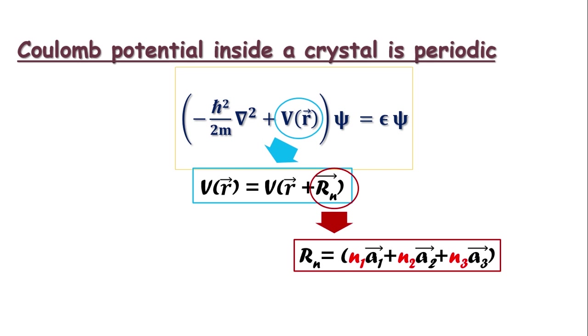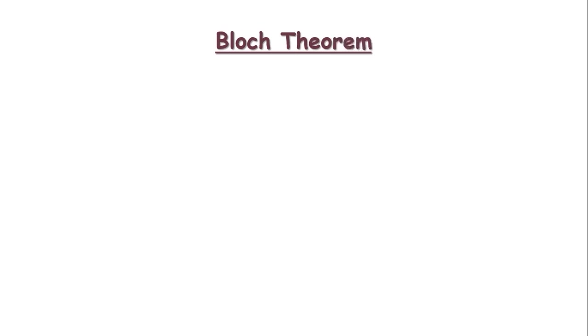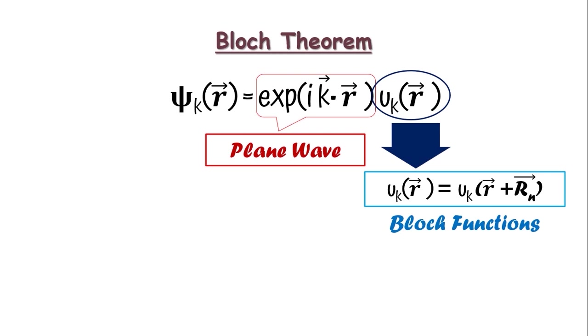However, what Bloch Theorem says in this context is, as the potential is such periodic, the wave function psi k of r in a crystal can be expressed as the product of a plane wave and a function u k of r, which has the same periodicity as that of the lattice, where u k of r equals u k of r plus Rn. Okay. So Rn is just that translational vector we have talked about. These u k functions are called the Bloch functions.